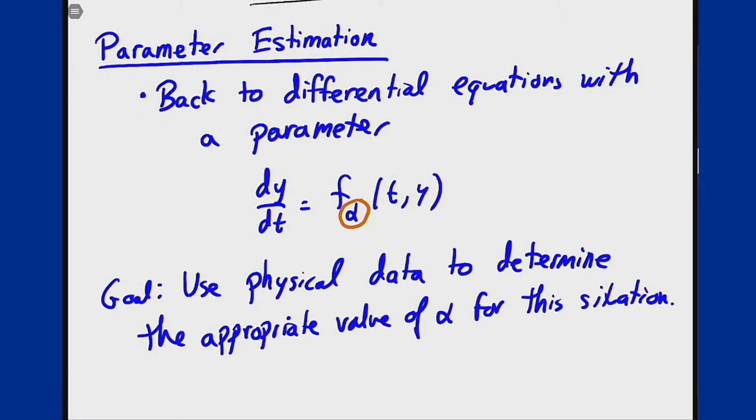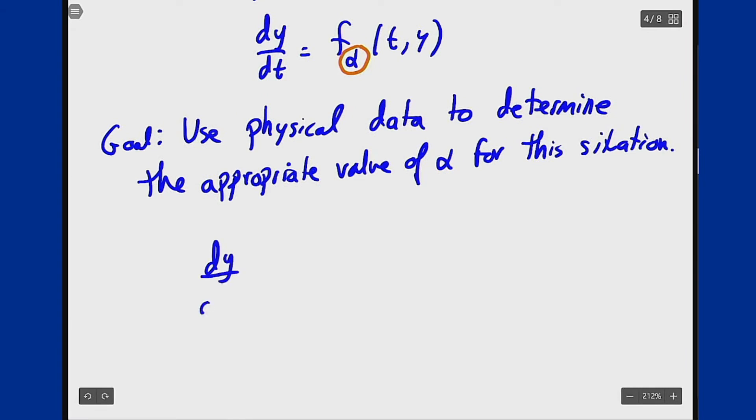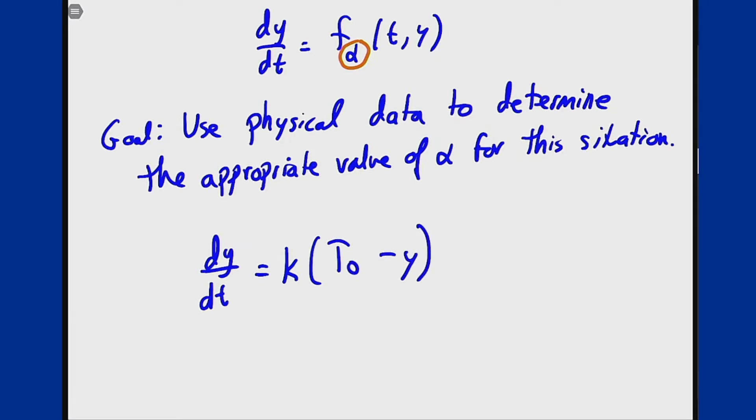One common example of this could be something with Newton's law of cooling. That equation is of the form dy/dt = k(T₀ - y), where y here is the temperature of an object. This makes sense: if y is higher than T₀, the object should cool down. If y is colder, it should warm up.